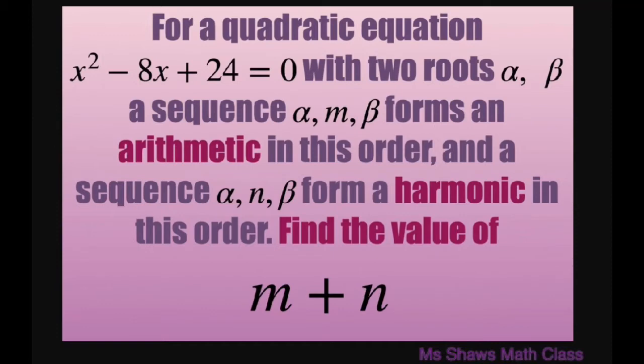A sequence alpha, m, beta forms an arithmetic sequence, and another sequence alpha, n, beta forms a harmonic in this order. We're going to find the value of m plus n.